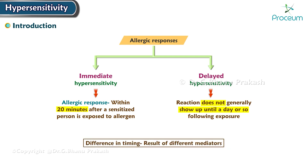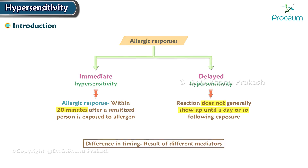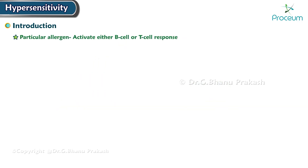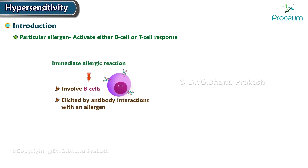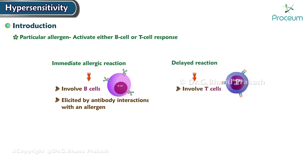The difference in timing is the result of the different mediators involved. A particular allergen may activate either a B cell or a T cell response. Immediate allergic reactions involve B cells and are elicited by antibody reactions with an allergen. Delayed reactions involve T cells and the more slowly responding process of cell-mediated immunity against the allergen.